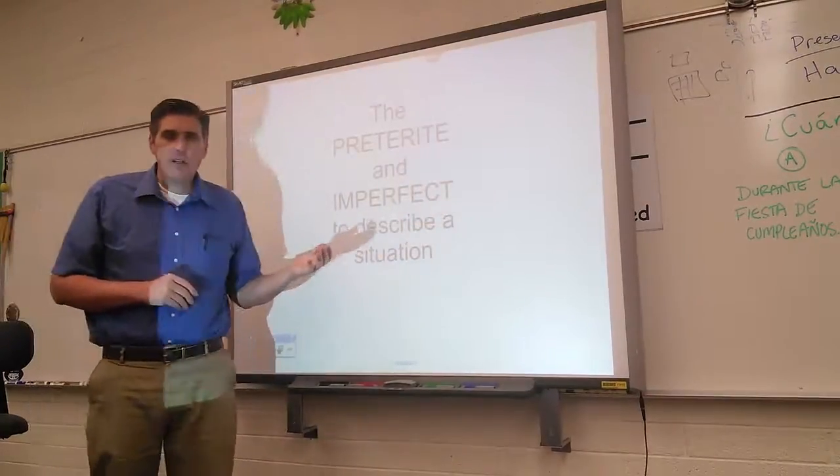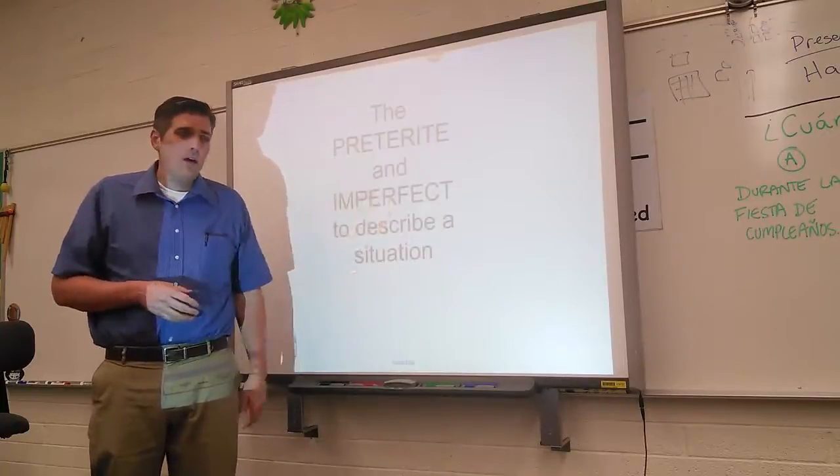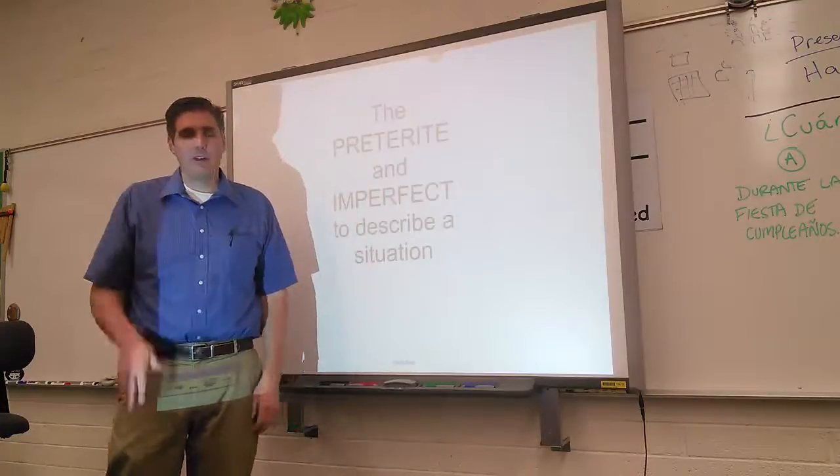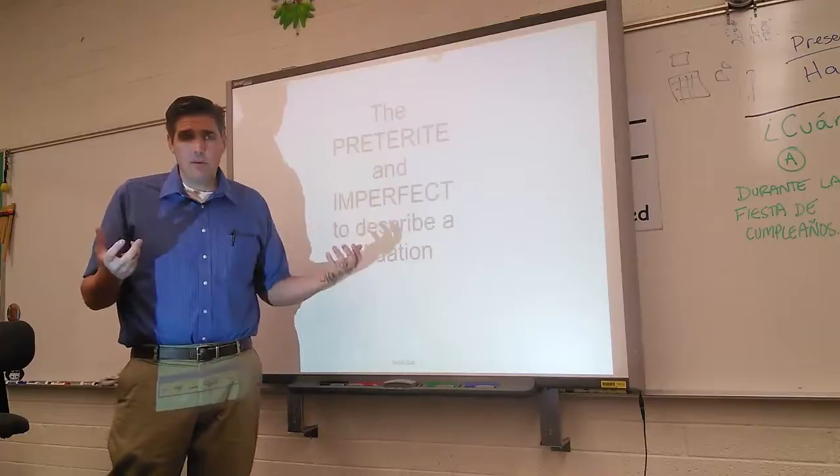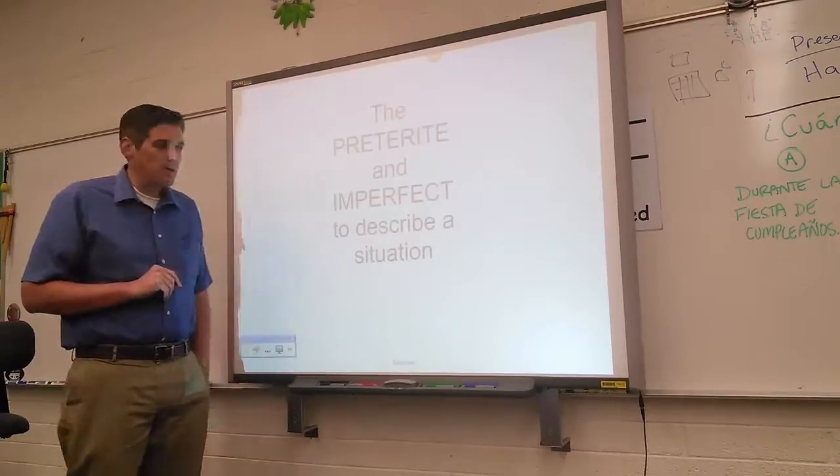And we've used the imperfect to talk about the way things used to be, things you used to do. I was a good kid, I studied all the time, I played with my friends. So we've used the preterite and we've used the imperfect but we've used them separately. Today we're going to talk about how to use them together and when to use them together.